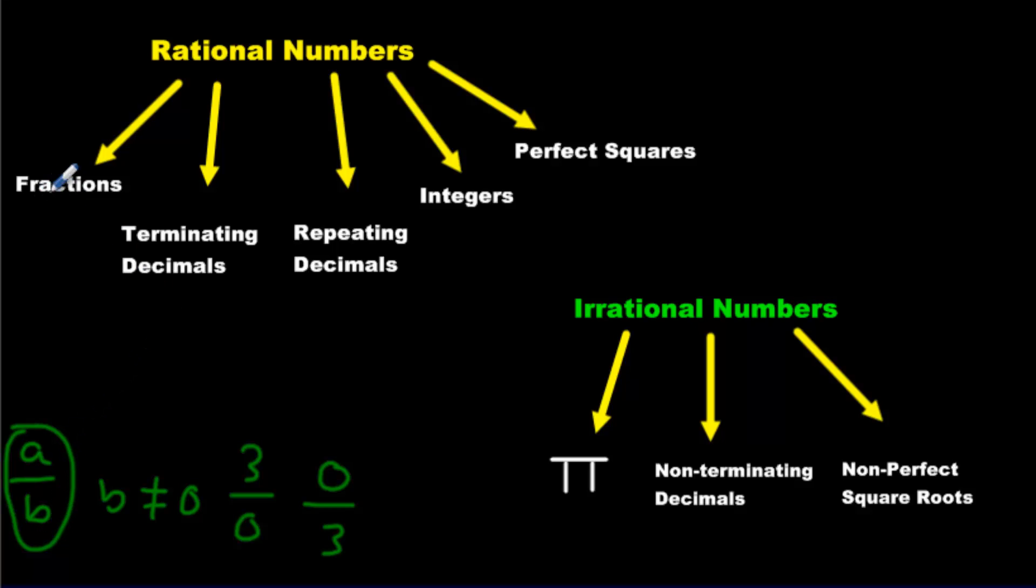For example, we have five categories of rational numbers. We have fractions. For instance, one-third. That's a rational expression. It's A over B. We can have negative two and a fourth. Since it's a fraction, it is a rational expression.